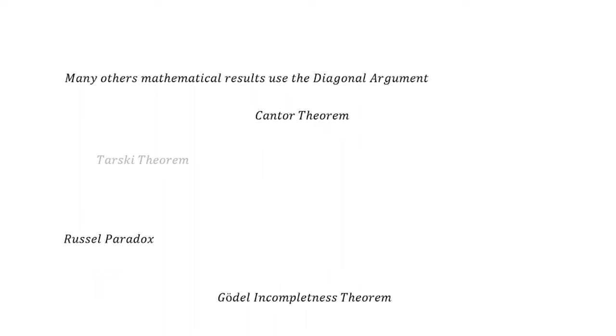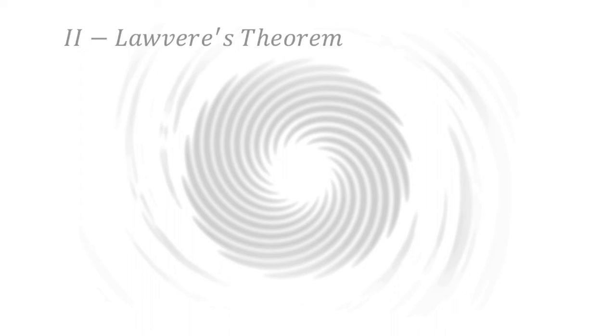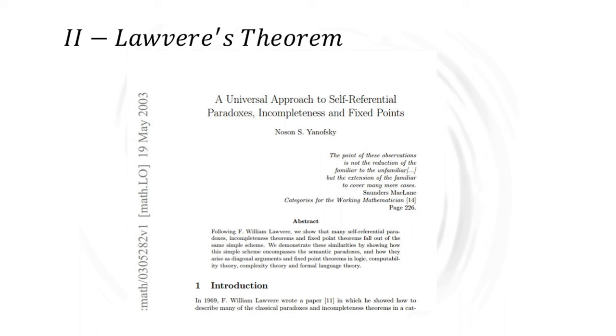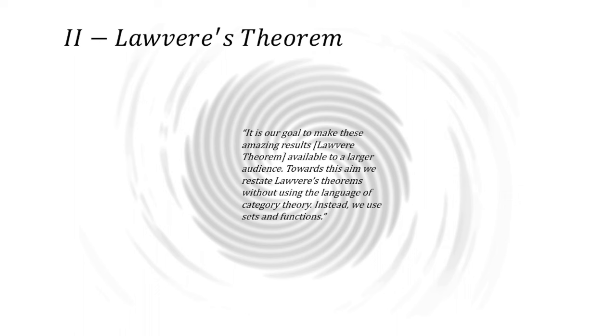Diagonal argument is shared between a lot of mathematical results. But one theorem is a generalization of all diagonal arguments. This is the Lawvere theorem. Before digging into this theorem, you should note that this is a result from a field called category theory. But since it brings a lot of complexity here, I decided to follow the approach angle of this paper from Noson Yanofsky that says it in a nice way. It is our goal to make these amazing results, the Lawvere theorem, available to a larger audience. Throughout this aim, we restate Lawvere's theorem without using the language of category theory. Instead, we use sets and functions.